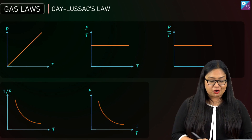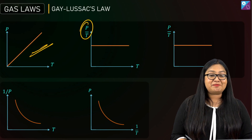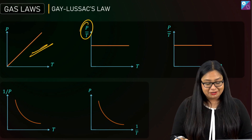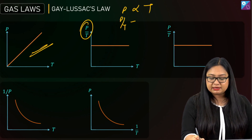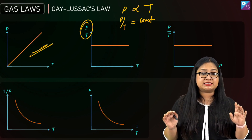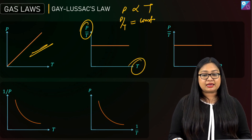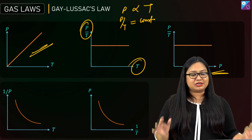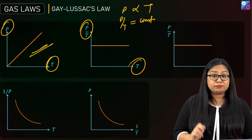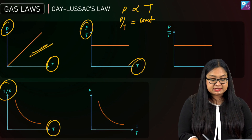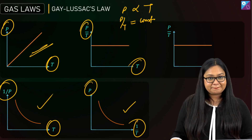For Gay-Lussac's law graphs: the P vs T graph is a straight line through the origin. The 1/P vs T graph gives a rectangular hyperbola, and P vs 1/T also gives a rectangular hyperbola. The P/T vs T (or P/T vs P) graph gives a straight line parallel to the x-axis. These graphs follow the same fundamental logic as the previous laws, and once you've seen them, exam questions on these graphs become very straightforward.